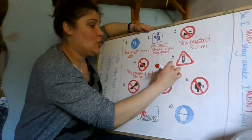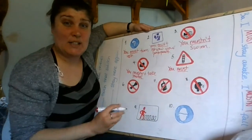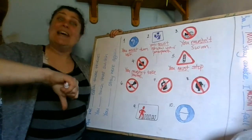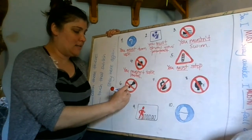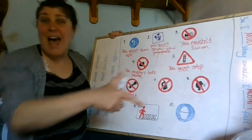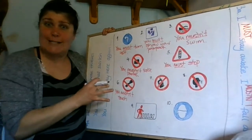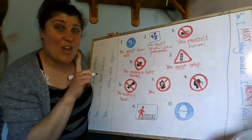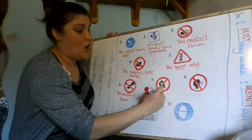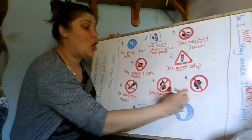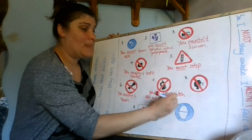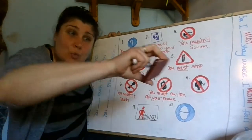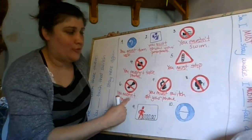Number five: it's a red light, so you must stop. Very good. Number six, with a cross — you must or you mustn't? Good, you mustn't. You mustn't touch the flowers. You mustn't touch electricity. You mustn't touch this. Number seven — now this one is a little bit tricky. You must switch off your mobile phone, because look at the picture — it says no mobiles, so you have to switch off the mobile.